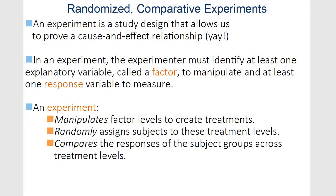Now let's go to experiments. Experiments let us prove cause and effect. We like experiments because that means we are taking control of things. We have a factor — one variable — and we are trying to manipulate it, with at least one response variable. We manipulate a factor and it creates treatments. We randomly assign subjects to those different levels and then compare the responses.